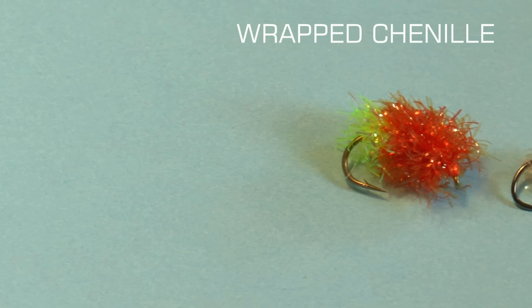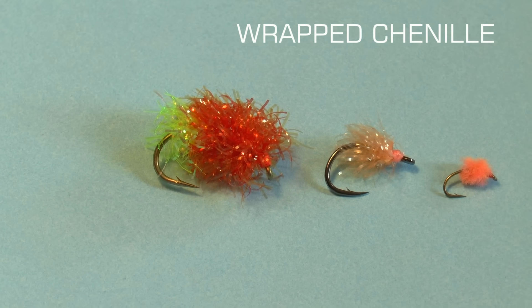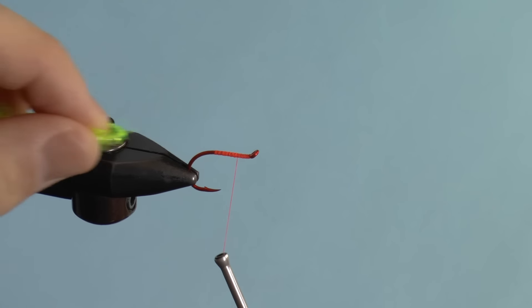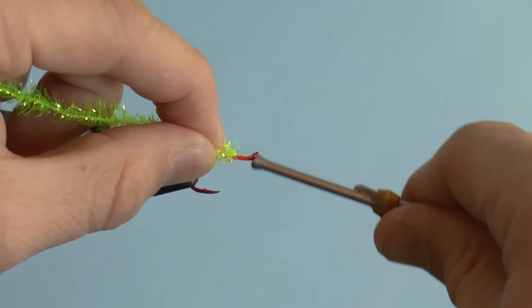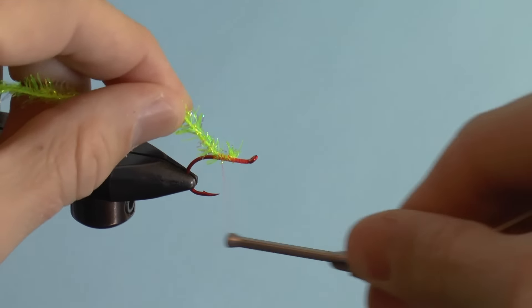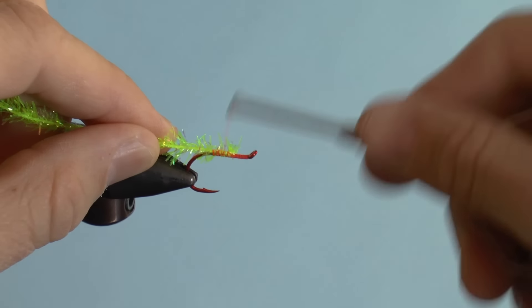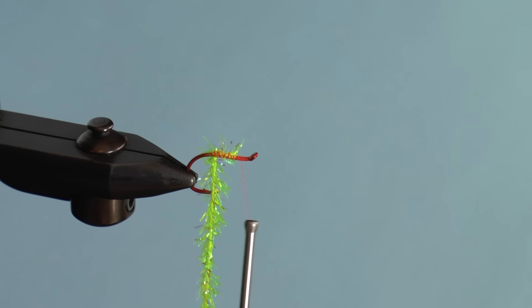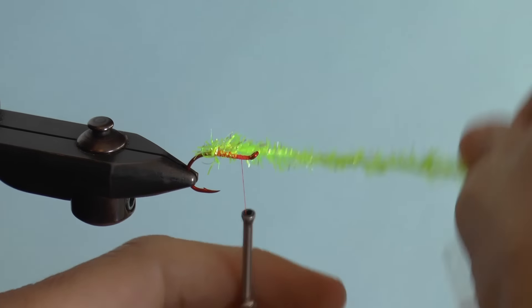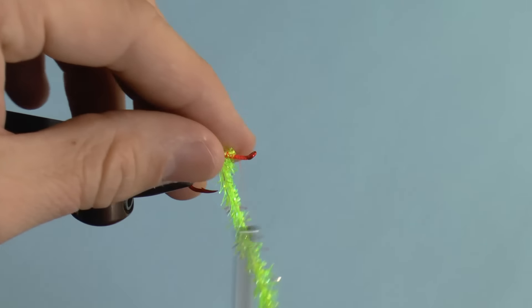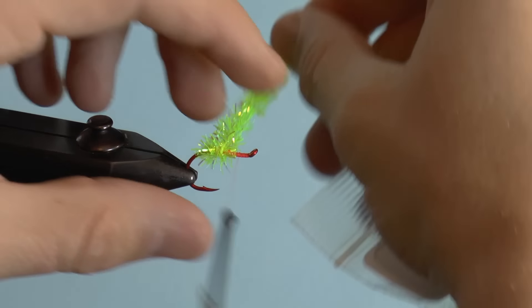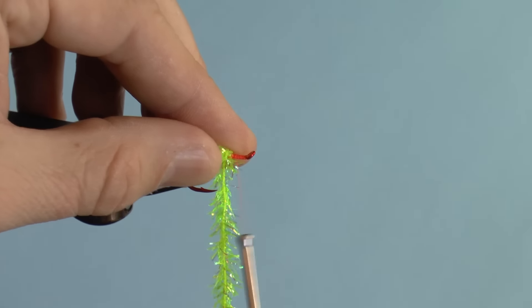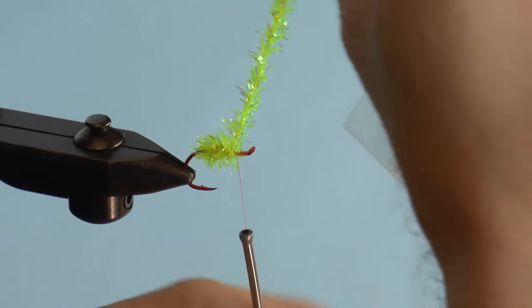Number two is wrapped fibers, usually chenille. Tie down your chenille of choice and wrap your thread forward. Wrap forward to make a little ball. Tie off and this is the egg.